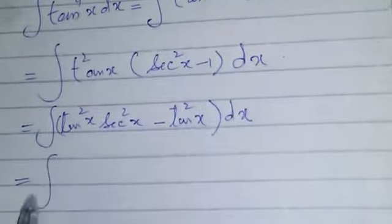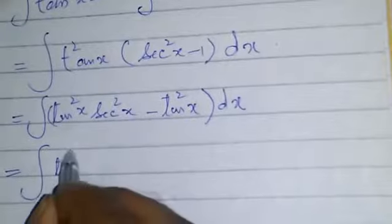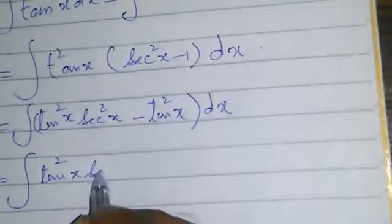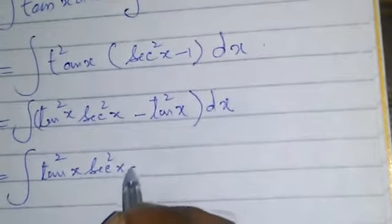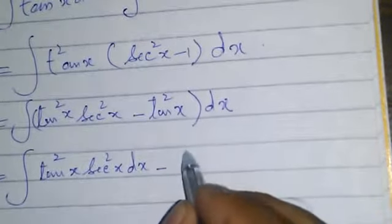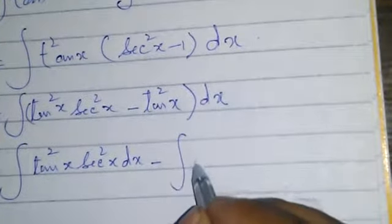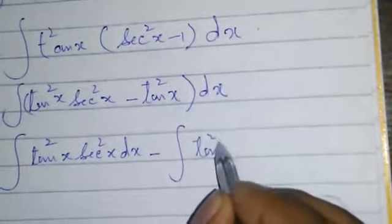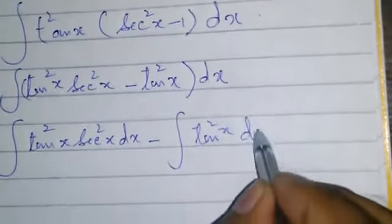Which is equal to integral tan squared x secant squared x dx minus integral tan squared x dx.